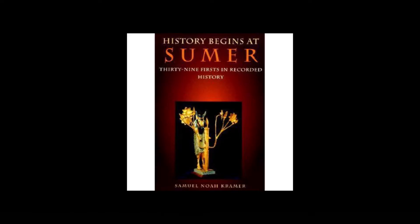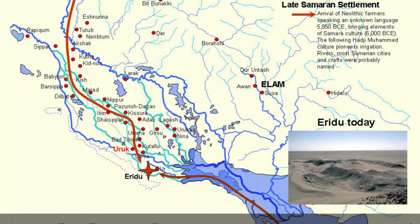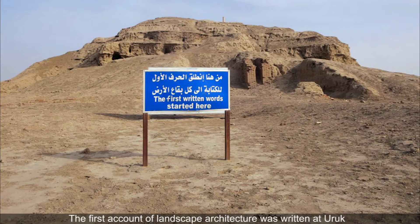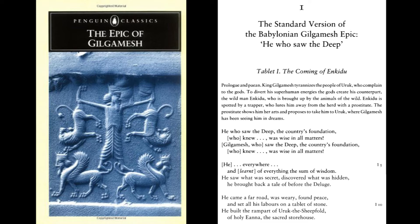Samuel Noah Kramer wrote that history begins at Sumer, meaning that the writing of history began at Sumer. This is also true of the history of landscape architecture, and the oldest literary record is from Uruk, in the country which is now Iraq. The Epic of Gilgamesh relates, in Andrew George's translation: 'He saw what was secret, discovered what was hidden. He brought back a tale of before the deluge.'